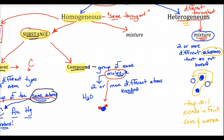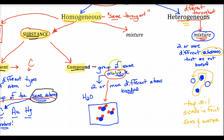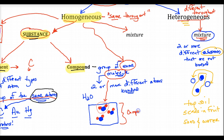One molecule of water is too small to talk about alone. When we have a group of the same type of molecules, we call that group a compound. So the smallest unit of a compound is the molecule. The entire group of the same molecules — notice the word 'same' — that's what makes it homogeneous. This is a compound.